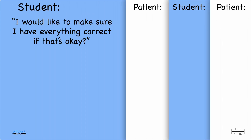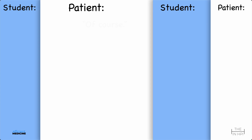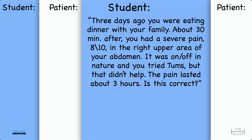I would like to try and make sure I have everything correct, if that's okay. Three days ago, you were eating dinner with your family. About 30 minutes after, you had a severe pain, 8 out of 10, in the right upper area of your abdomen. It was on and off in nature, and you tried Tums, but that didn't help. The pain lasted about three hours. Is that correct?